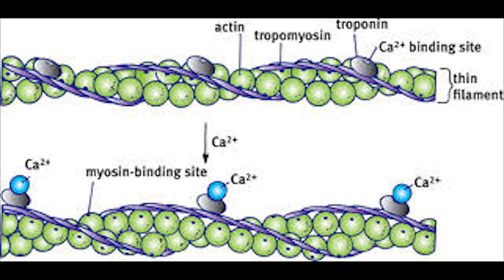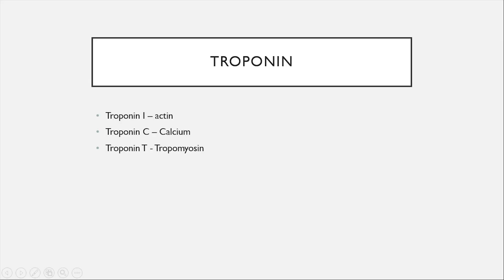Tropomyosin is another protein that wraps the spiral formed by the actin molecule. Tropomyosin is believed to cover the active sites of the actin molecule in the relaxed state. There is also another protein called troponin, which is composed of three loosely attached subunits — troponin I, troponin C, and troponin T. Troponin I is attached to actin, troponin C is attached to calcium, and troponin T is attached to tropomyosin.